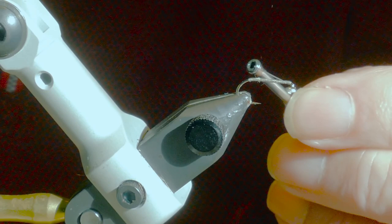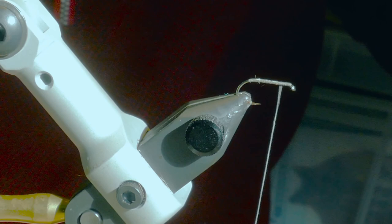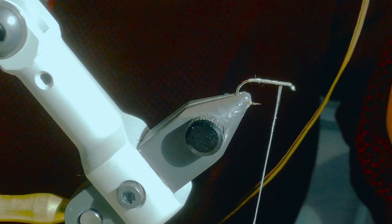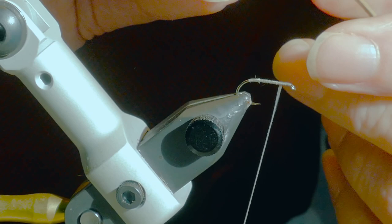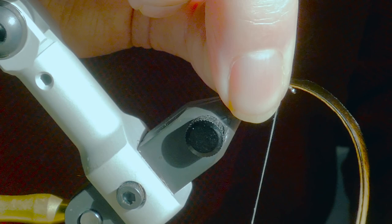So down for the body, whisk back up and the hackle. I'm using a genetic saddle feather. Now every now and again on some of these genetic capes you get some feathers that are incredibly small. By small I mean short fiber length and they're just the job for the bodies of these sedges.